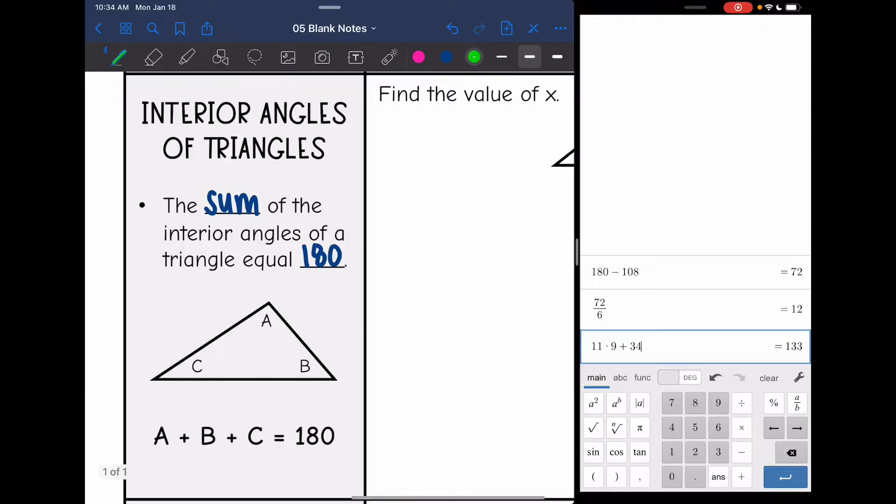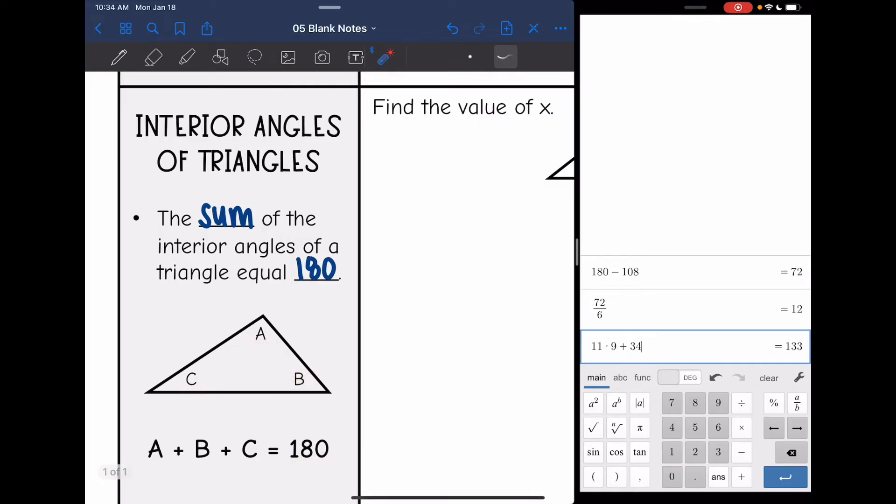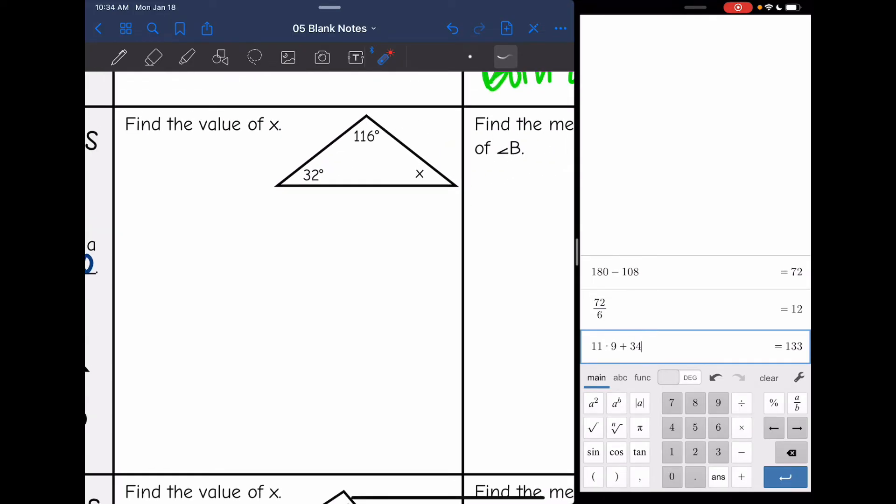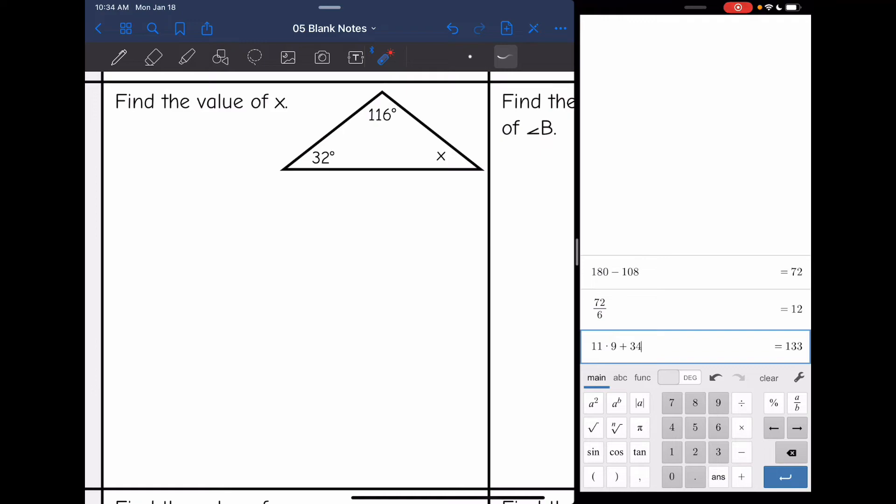Then we also learned about interior angles of triangles. So remember the sum of the interior angles of triangles always equals 180 degrees. So I can add the three inside angles and set them equal to 180. So let's do that on this first one. They want us to find the value of x, that missing angle. So I'm just going to add everything together. 32 plus 116 plus x. There's all my interior angles and they equal 180 degrees. Now I need to solve this for x.